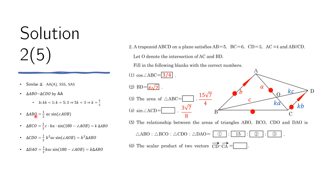So the ratio of areas AOB : BCO : CDO : ADO = 1 : K : K² : K = 1 : 3/5 : 9/25 : 3/5. Since the problem gives the second term as 15, we multiply everything by 25 to get 25 : 15 : 9 : 15.